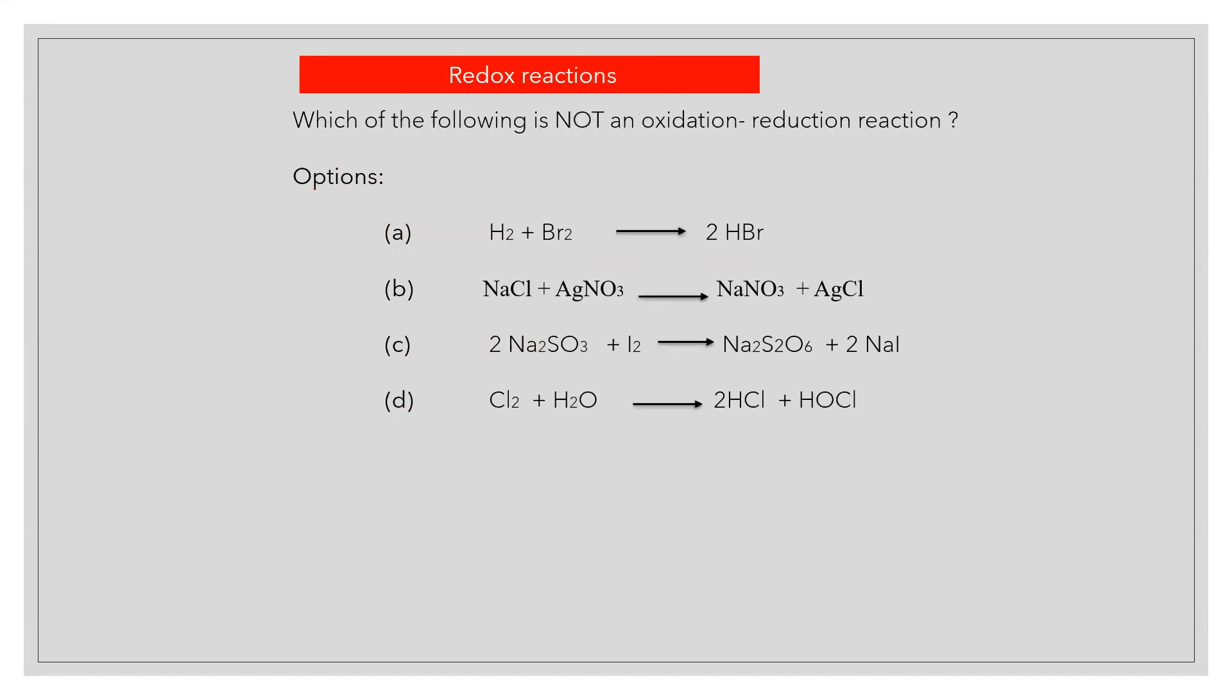Which of the following is not an oxidation-reduction reaction? Answer D: NaCl + AgNO3 gives NaNO3 + AgCl. Ionic reaction.